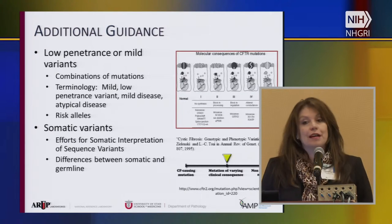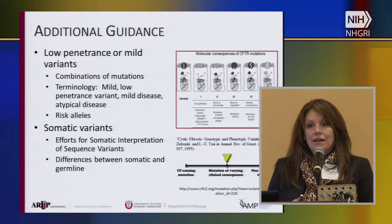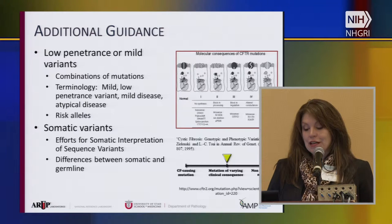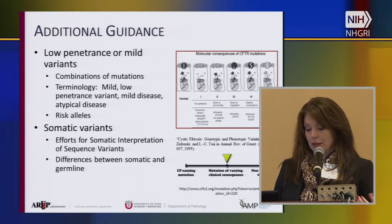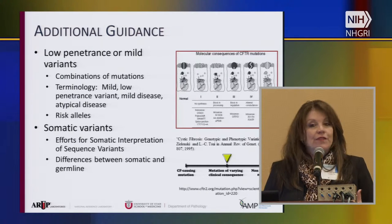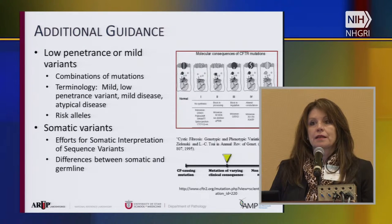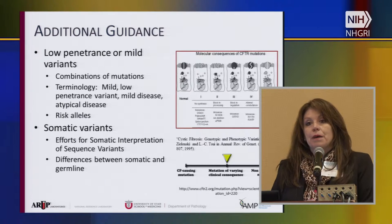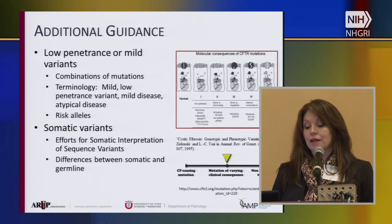As has been mentioned several times this morning, low penetrance, mild variants, or combinations of these in recessive diseases are still difficult. The terminology itself could potentially get better. For example, I use CF and pancreatitis — it's a combination of mutations. Some would be called mild mutations, sometimes low penetrance mutations, sometimes a risk allele for pancreatitis. There are also different definitions of mild versus atypical disease. For cystic fibrosis, a mild disease is still cystic fibrosis but without pancreatic involvement, whereas an atypical disease would possibly be pancreatitis. We could use a lot of help just defining these terms so we can all start talking about the same things.